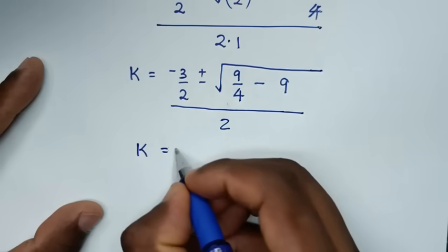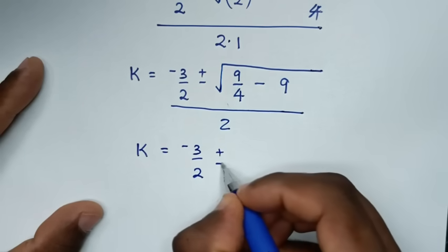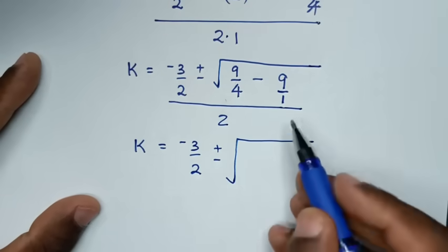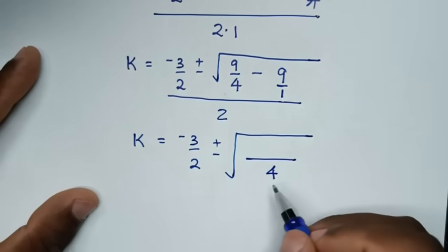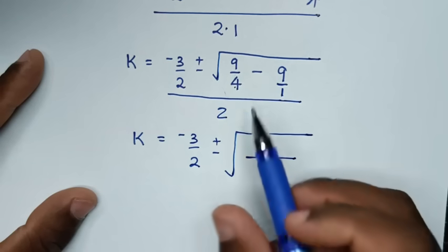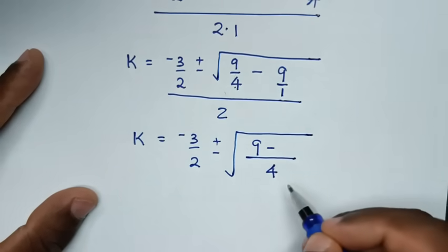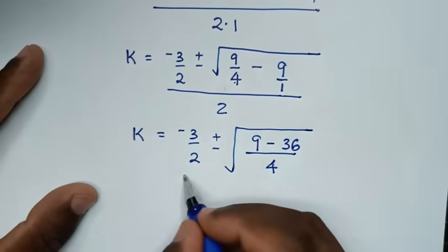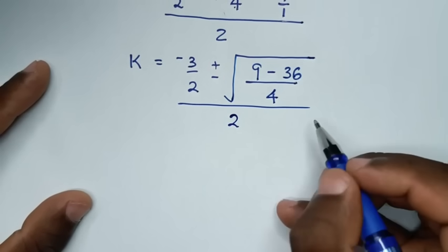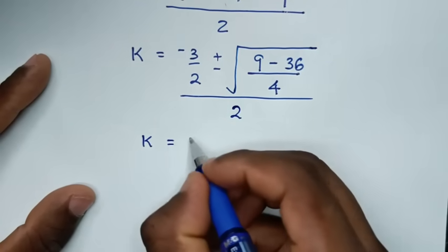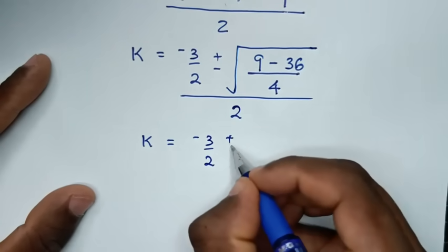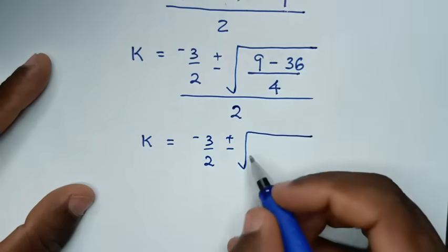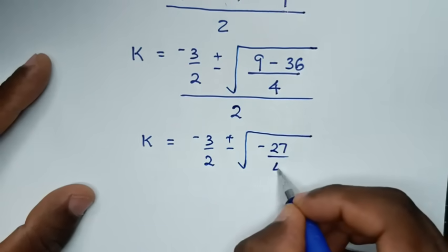Simplifying inside the square root: 9 over 4 is the same as 9 over 4, and 9 is the same as 9 over 1 — with a common denominator of 4 — giving 9 over 4 minus 36 over 4. So the square root is of 9 minus 36 over 4, which is negative 27 over 4, over 2.